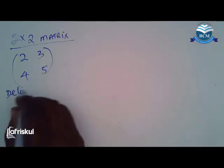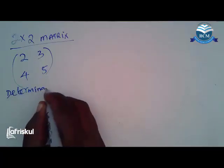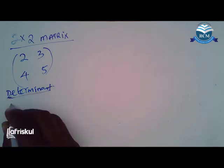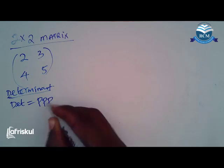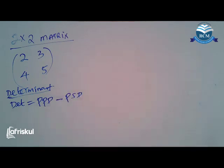So step number one, give us the determinant. Now, ladies and gentlemen, how do we get this determinant? To get determinant, we shall be taking PPD minus PSD. PPD stands for product of primary diagonal minus product of secondary diagonal.